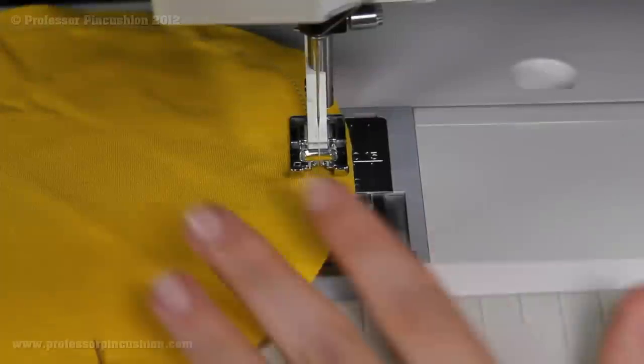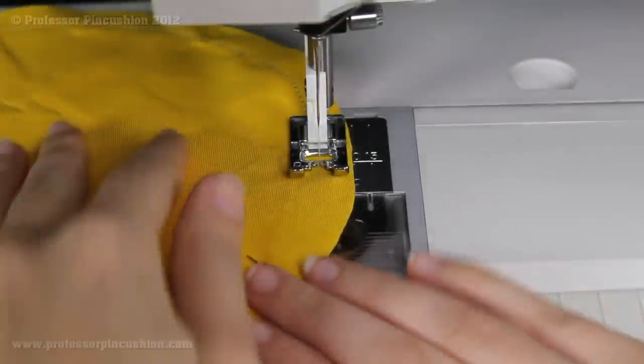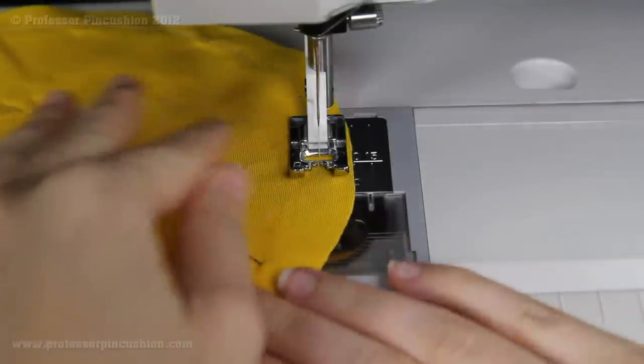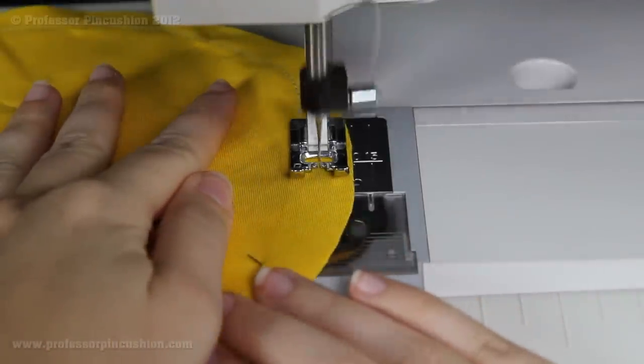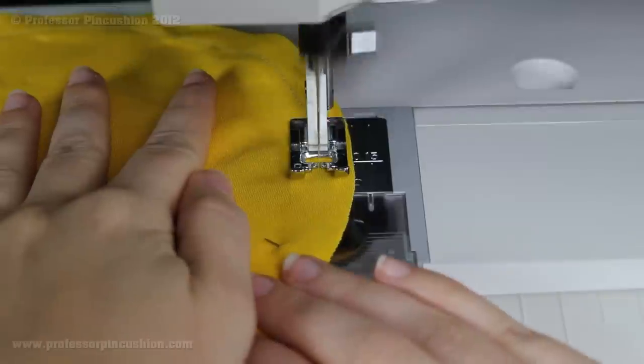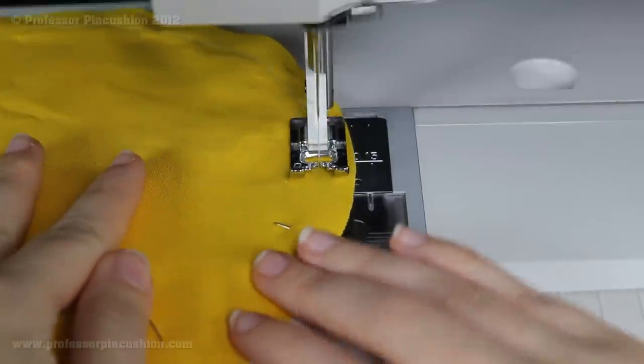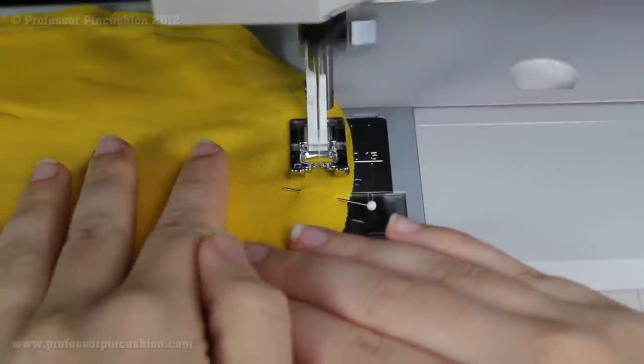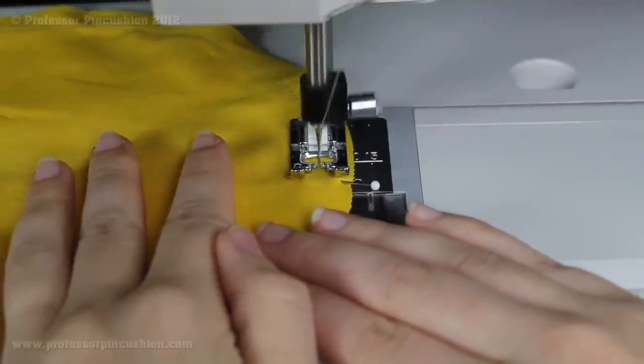So now I'm going to do a seam on my circle here. It's definitely a curved edge and I have two circles that have been pinned together. I'm just going to start very slowly, and with your hand you're just trying to guide it around the curve. I definitely go a little bit slower than I do at the straight edge.